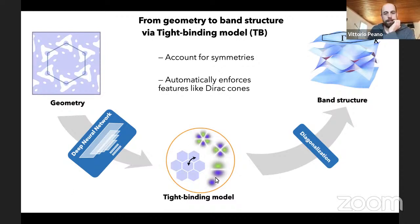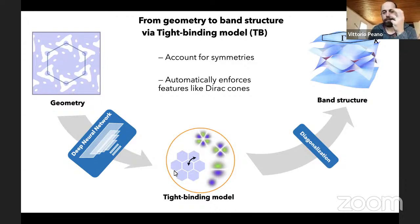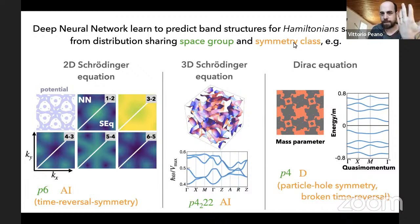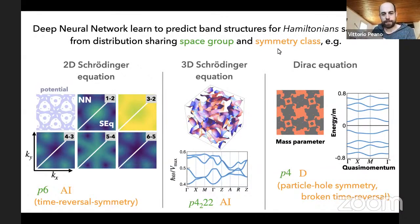Each neural network we train predicts the best band structure for a Hamiltonian sampled from a distribution where all Hamiltonians share the same space group and symmetry class. For each space group and symmetry class, we need a different tight-binding model, and we must find the most general tight-binding model that can predict any band structure.